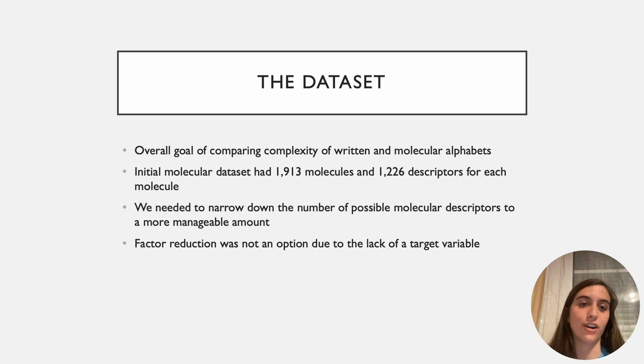On the molecular side, our initial dataset had 1,913 theoretically possible molecules and 1,226 descriptors for each molecule. Obviously, that's a lot of descriptors and a bit hard to deal with, so we need to narrow down the number of possible molecular descriptors to a more manageable number, ideally five.